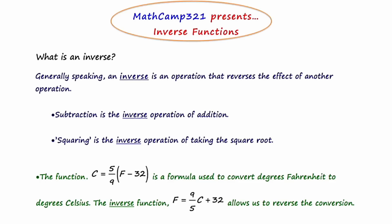The function c equals 5/9 times the expression (f minus 32) is a formula used to convert degrees Fahrenheit to degrees Celsius. The inverse function would undo this and allow us to reverse the conversion, and that function would be f equals 9/5 c plus 32. This lesson will show you how to find such an inverse.